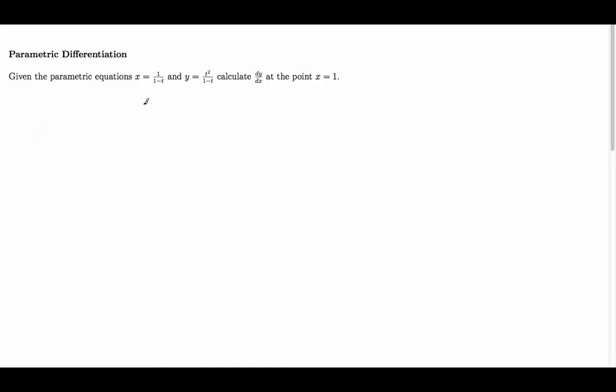For this example, I've been given the parametric equations x equals 1 over (1 minus t), and y equals t squared over (1 minus t), and I've been asked to calculate dy/dx at the point where x equals 1.